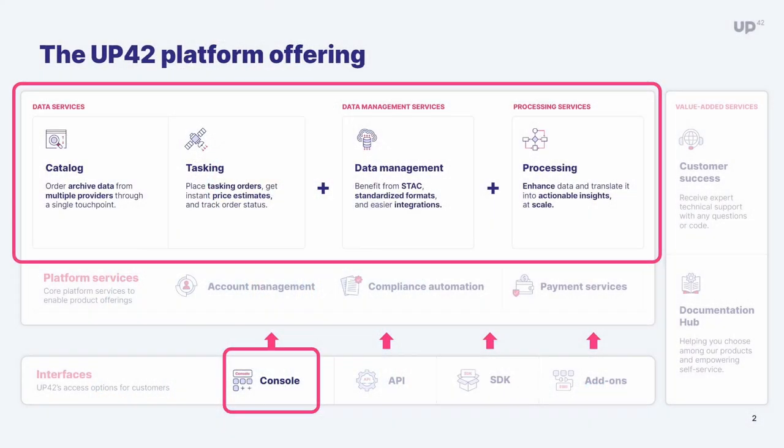To start, we're going to be talking about the Console today. This is the main front-end application that we have, and it deals with a lot of what UP32 has to offer: ordering data from the catalog, getting tasking, managing your data, processing, and all of that. This is all handled in the Console.